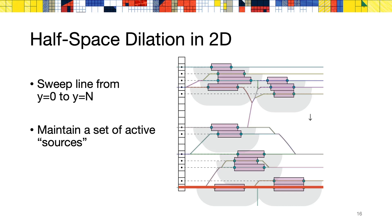In practice, we only need to record the set of seeds that are actively contributing to the Voronoi diagram on the current sweep line. And we build the dilated arrays on the fly as we advance the sweep line.